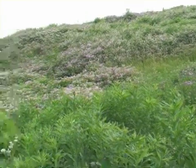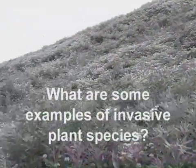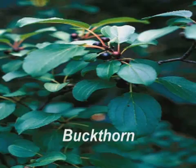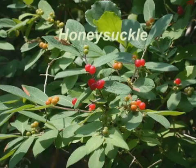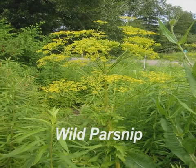So now we have a definition, but what are some examples of invasive plant species? Black locust, reed canary grass, sweet clover, buckthorn, honeysuckle, garlic mustard, spotted knapweed — which will invade prairies — wild parsnip — which also invades prairies.